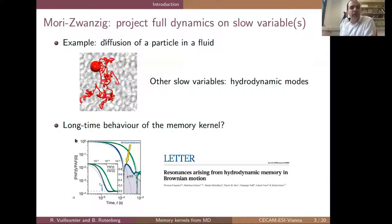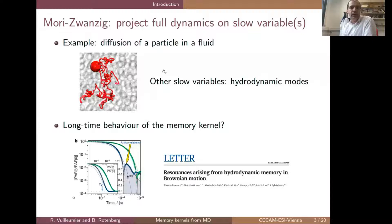We'll use the Mori-Zwanzig projection, exactly as you have shown it, and apply it in this talk to the diffusion of a particle in a fluid where the slow variable is the diffusion of the particle. We will need to remind that in such a setup there are still slow modes in the bath — the hydrodynamic modes. From experimental work on diffusion of a particle, one can show that there are effects due to hydrodynamics in the memory kernel, and we'd like to compute the memory kernel in this situation.